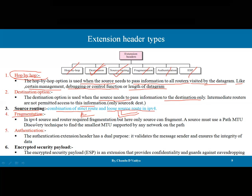Fragmentation is a new concept in IPv6. In IPv4, both the source and the router could perform fragmentation. But here, only the source can fragment. The source must use path MTU discovery to find the smallest MTU supported by any network on the path. This fragmentation information — including more fragment, no-fragment offset, and identification — has been separated from the base header into the extension header.